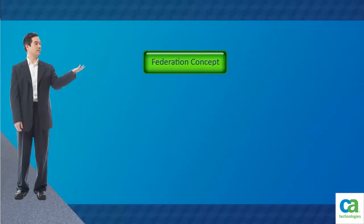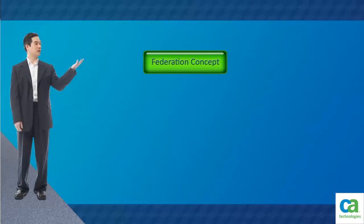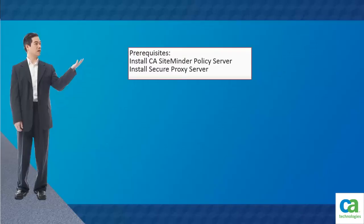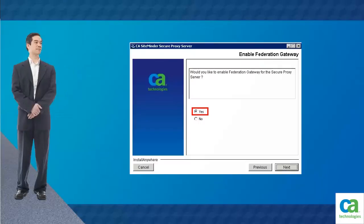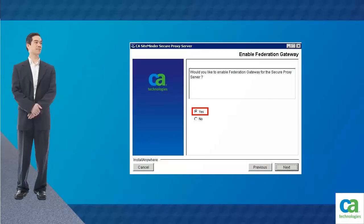If you want to learn more about how the federation transactions work, click the federation concept button now. Ensure you have CA SiteMinder Policy Server and Secure Proxy Server installed. While installing Secure Proxy Server, select Yes to enable Federation Gateway.